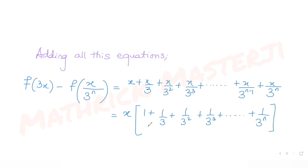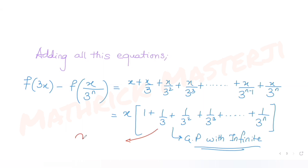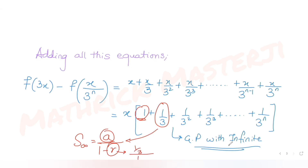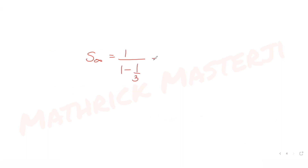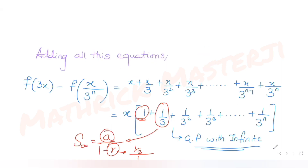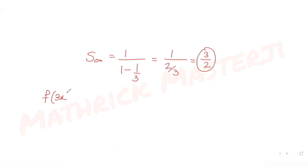This is a geometric progression. The common ratio is 1/3, so it's a GP with infinite terms. The sum of infinite terms of a GP is a/(1 - r), where a is the first term and r is the common ratio. Here a = 1, r = 1/3, so the sum = 1/(1 - 1/3) = 1/(2/3) = 3/2. Therefore f(3x) - f(x/3^n) = x · (3/2).